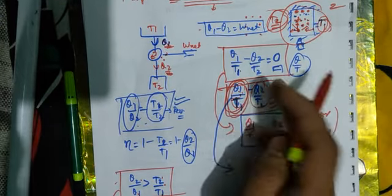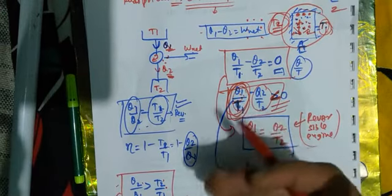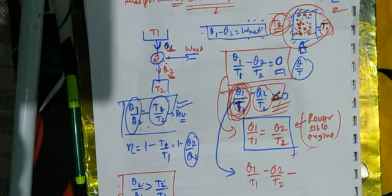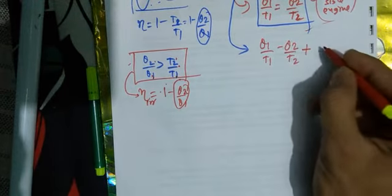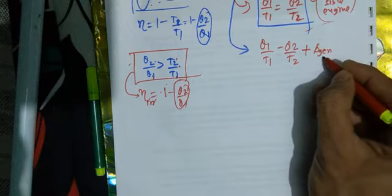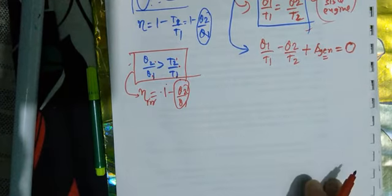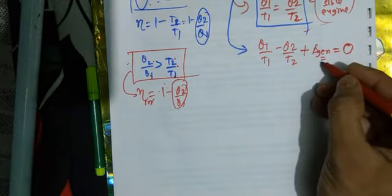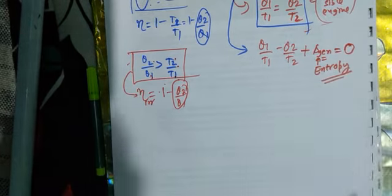So what is happening in between that one quantity becomes greater? Something is being generated inside the system on its own. Clausius analyzed this and said something is being generated inside the system, and he denoted that quantity with S. To make the equation equal to zero, you add this internally generated quantity.